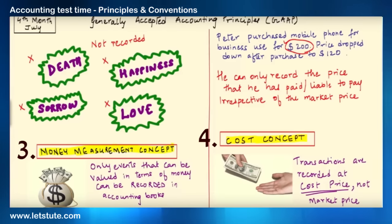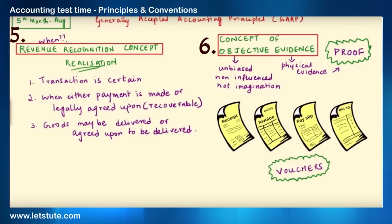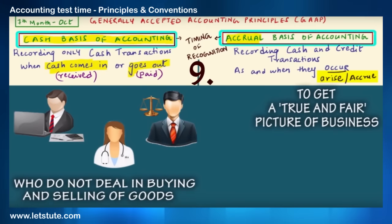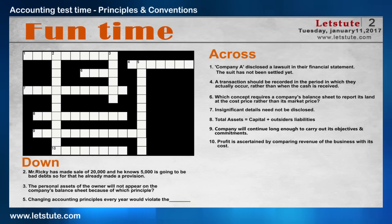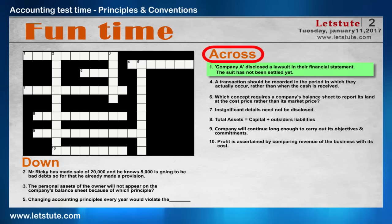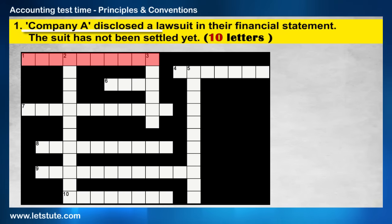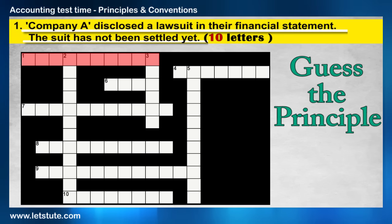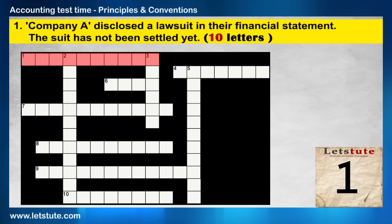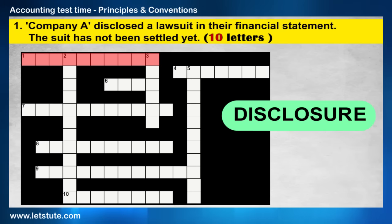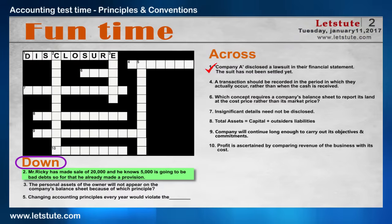So we thought we should try these. Let's revise quickly and solve it together. We can start from anywhere — I'm going in the order of numbers. The first one is across: Company A disclosed a lawsuit in their financial statements; the suit has not been settled yet. Guess the principle — there is a hint in the question itself. Yes, the disclosure concept.